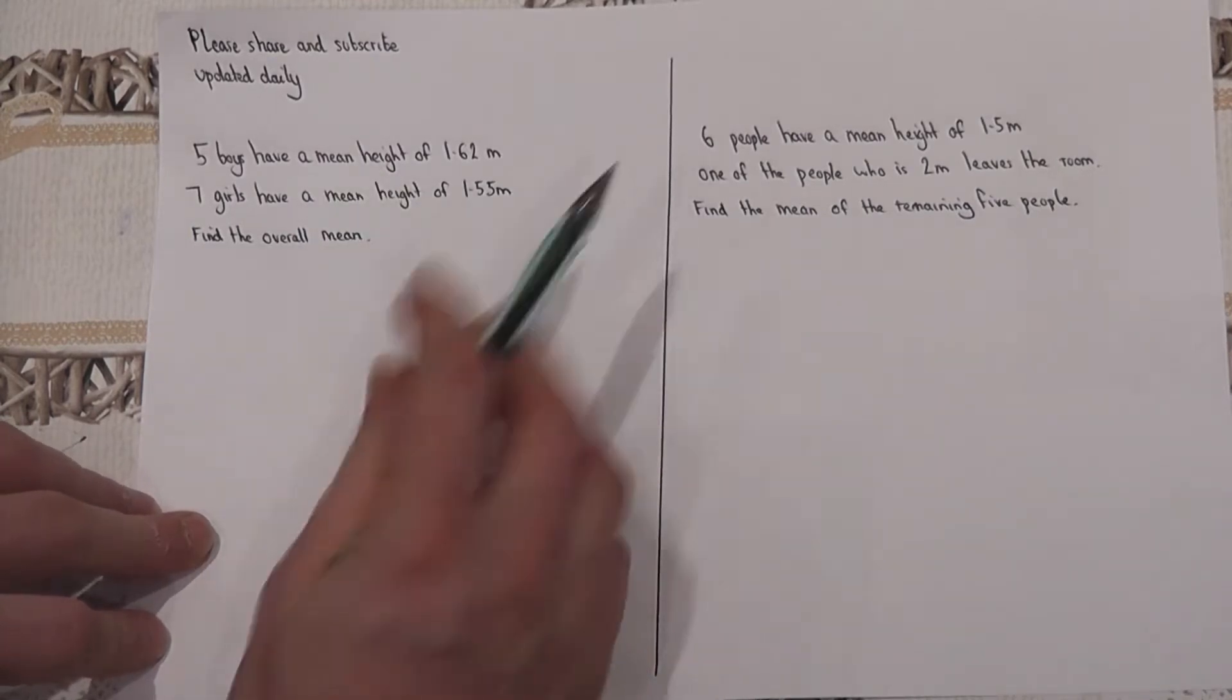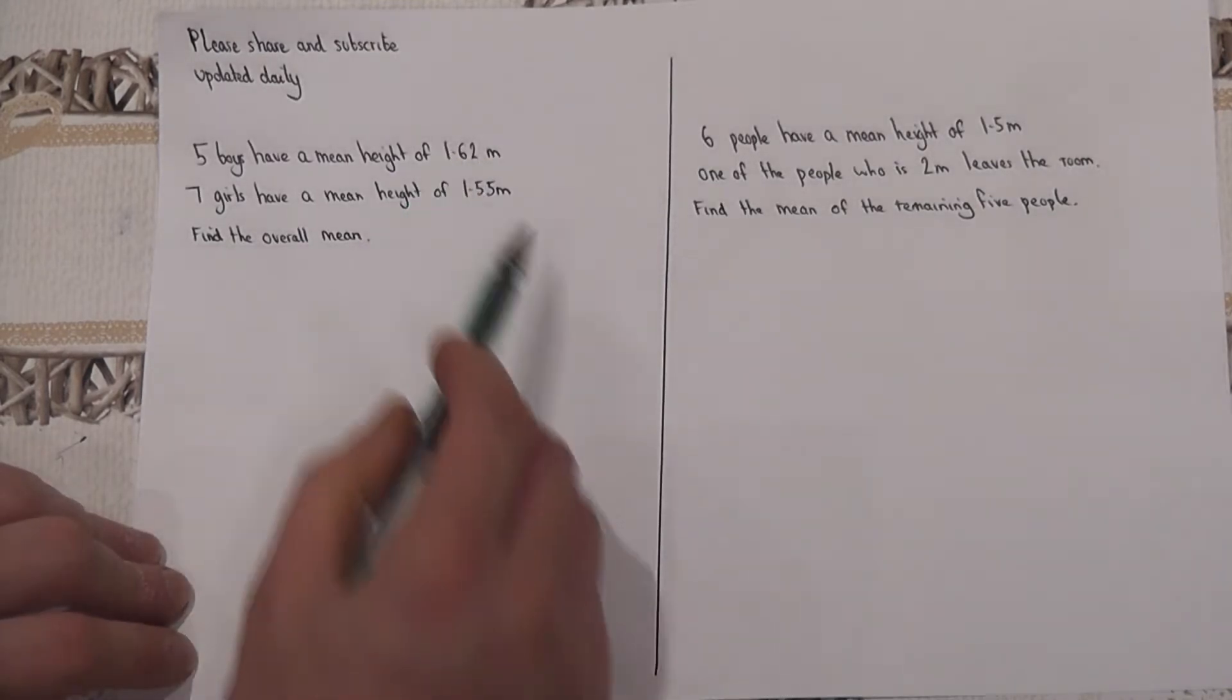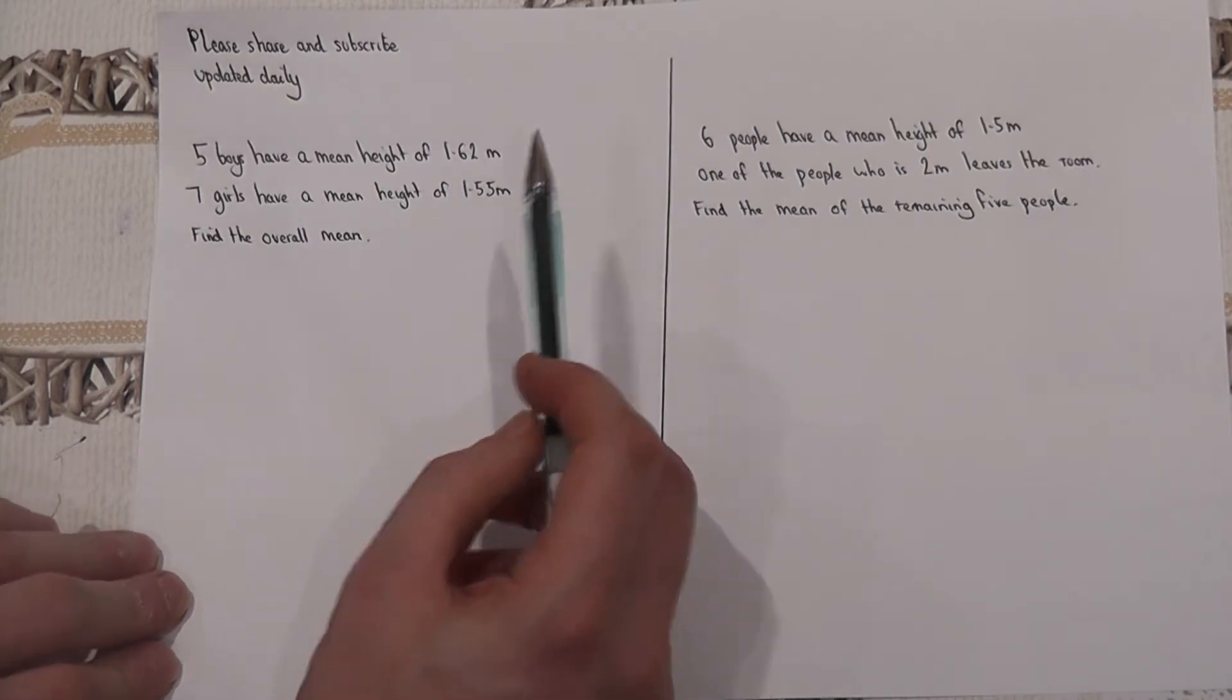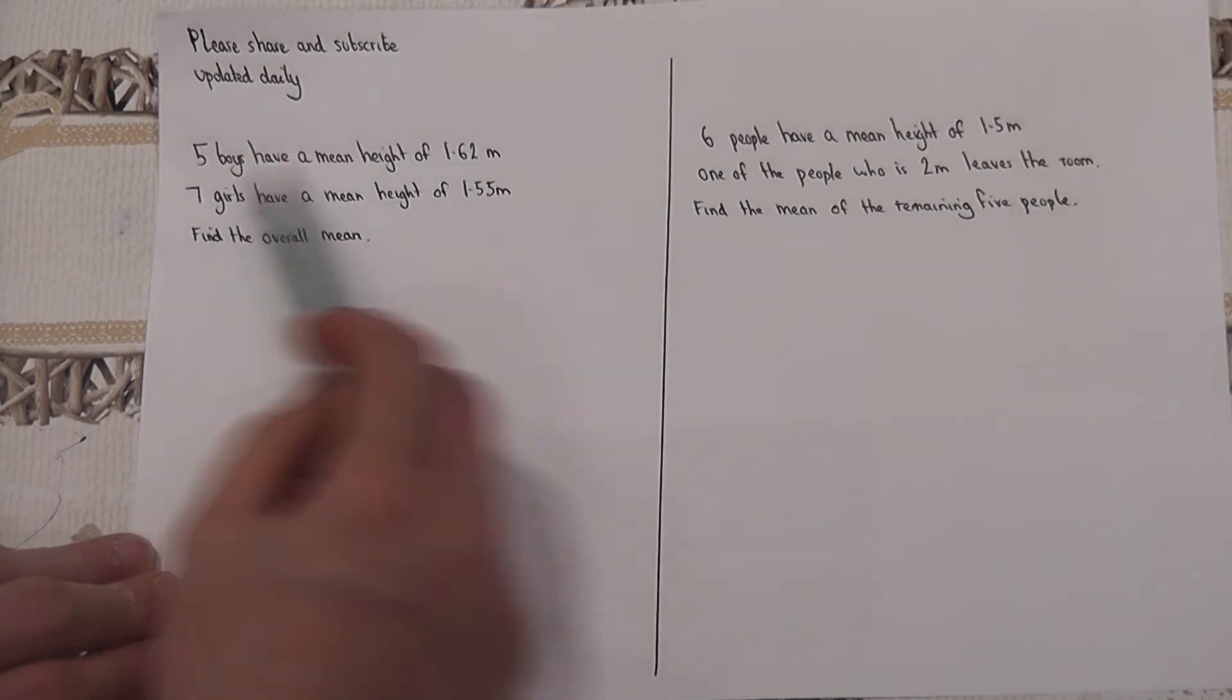Now a common error is to add together the two heights and divide by two, but the problem is there were more girls than boys and therefore I've got to factor in this somehow in the calculation.